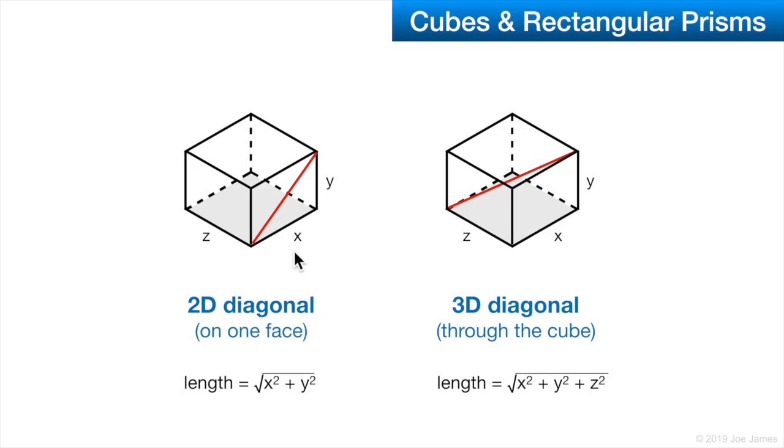We have a 2D diagonal, which means that it's on one face only. You can see this red line—it's just on one face, doesn't pass through the inside of the cube. If we want to find the length of that, that's just √(x² + y²), the Pythagorean theorem. We have x, we have y, and then we're trying to find the distance, this hypotenuse. This is a right triangle. We could also have a 3D diagonal that passes through the center of the cube. In this case, we use all three sides: x, y, and z. We just square them all and take the square root of that, and then we can find the length of this diagonal through the middle of the cube.